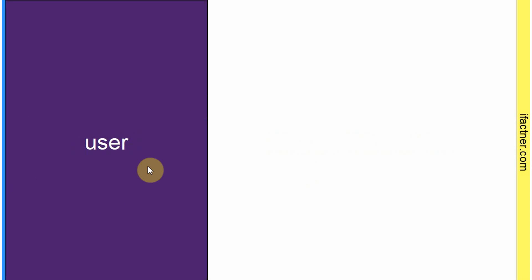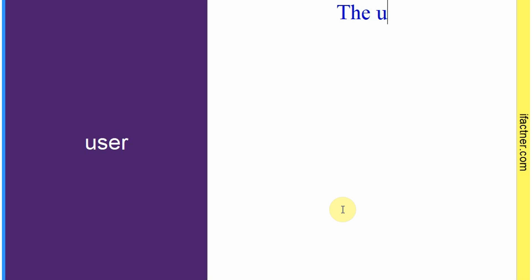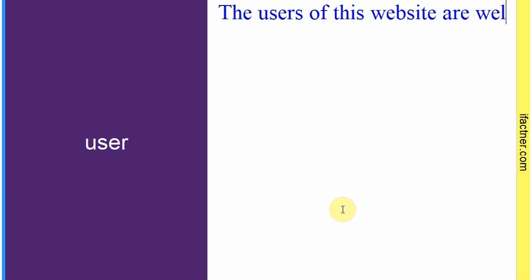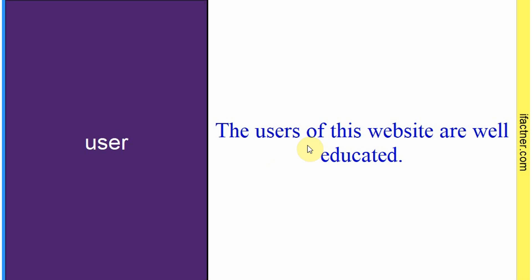Word hai: 'user'. Sentence: 'Users of this website are well educated.' Jo log is website ko istamal karte hain — istamal karne waale — woh parhe likhe hain. Toh 'user' hota hai istamal karne waala — koi bhi service ya product ko istamal karne waale ko 'user' kehte hain. Computers mein hum 'end users' ka bahot zikr karte hain. Sentence banaaya: 'Users of this website are well educated.'